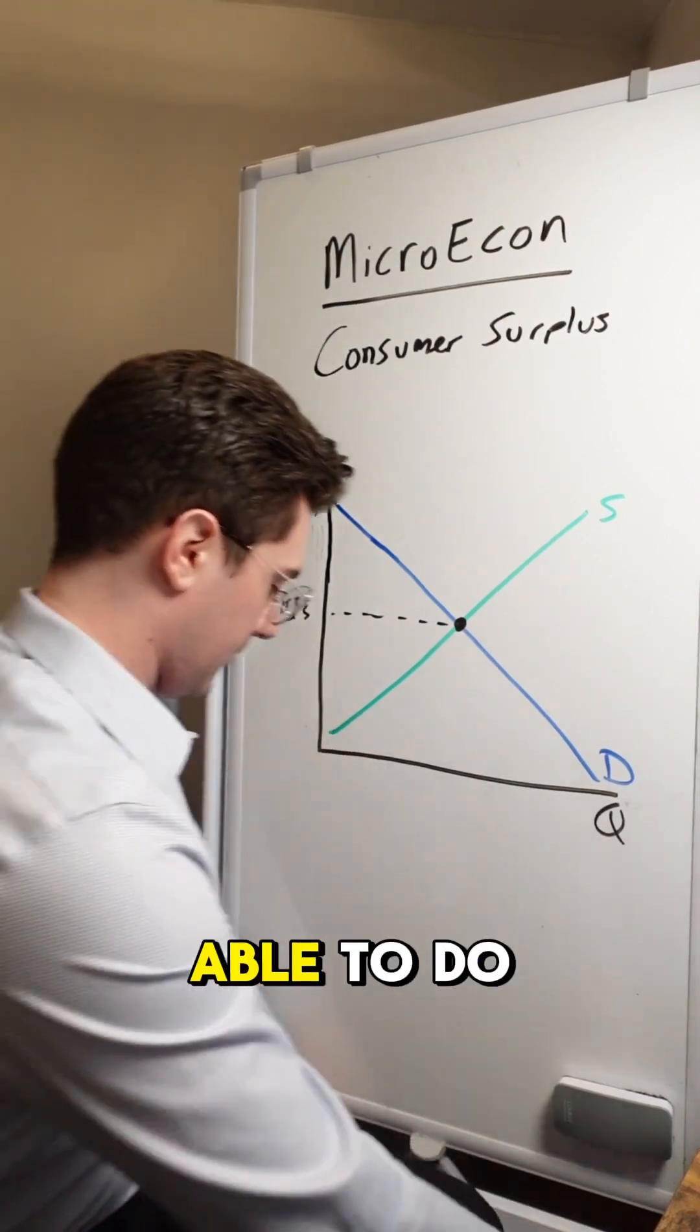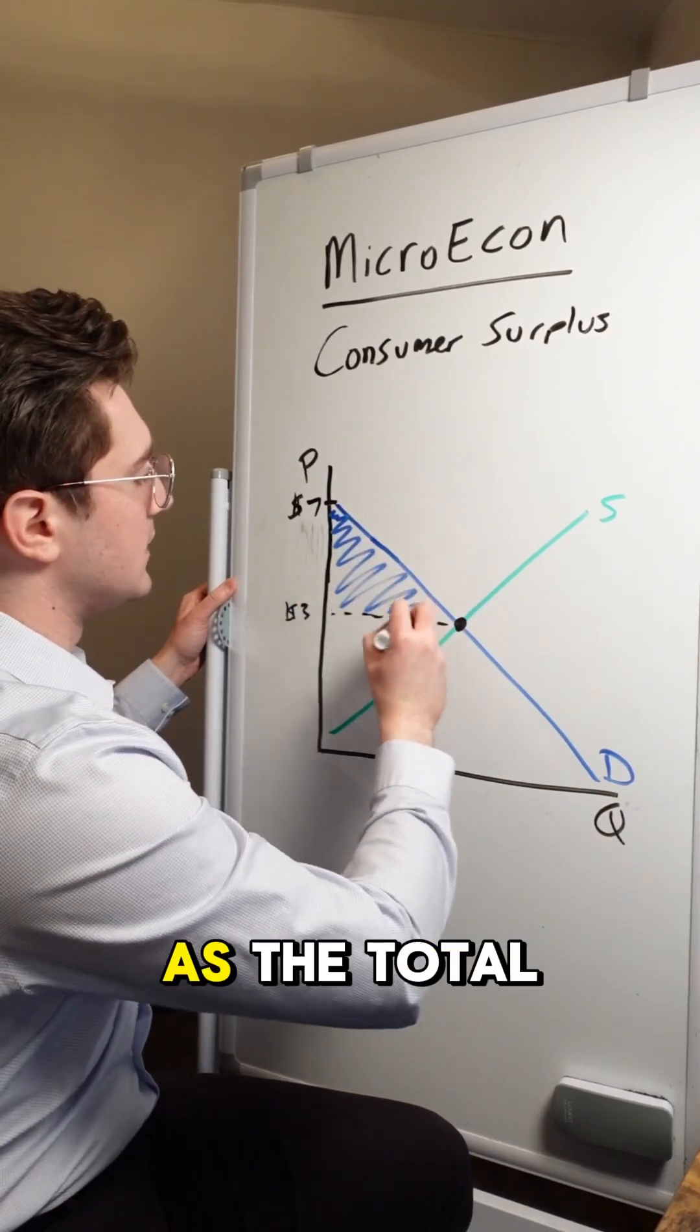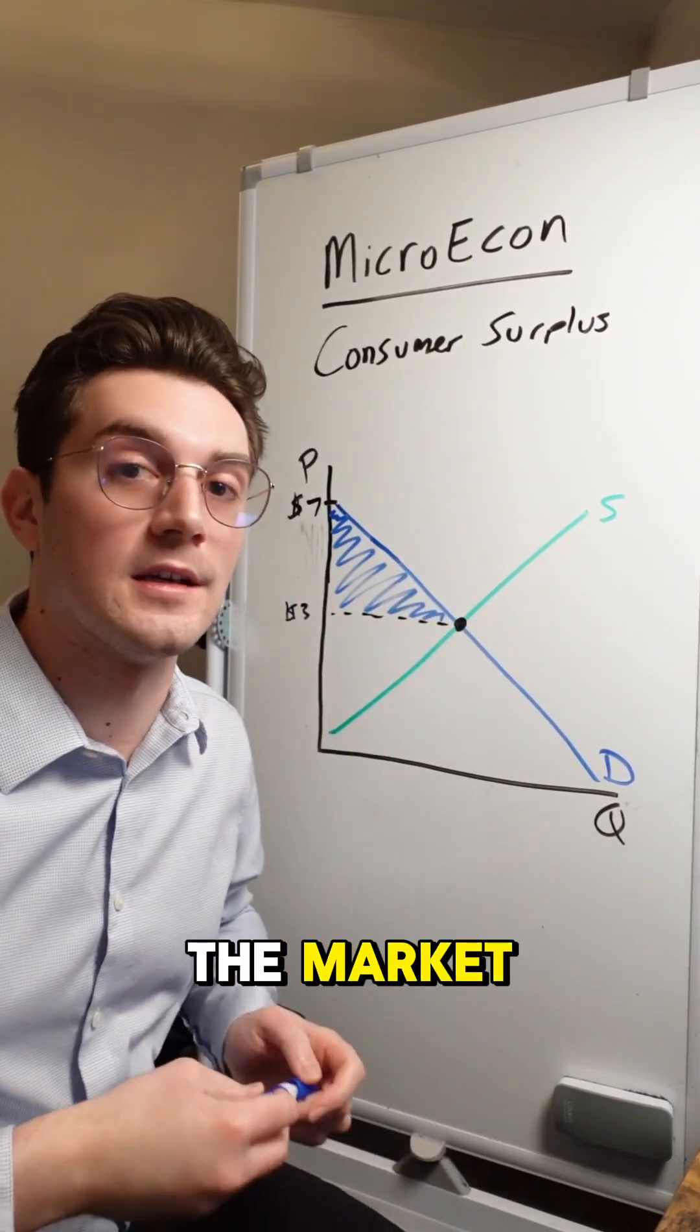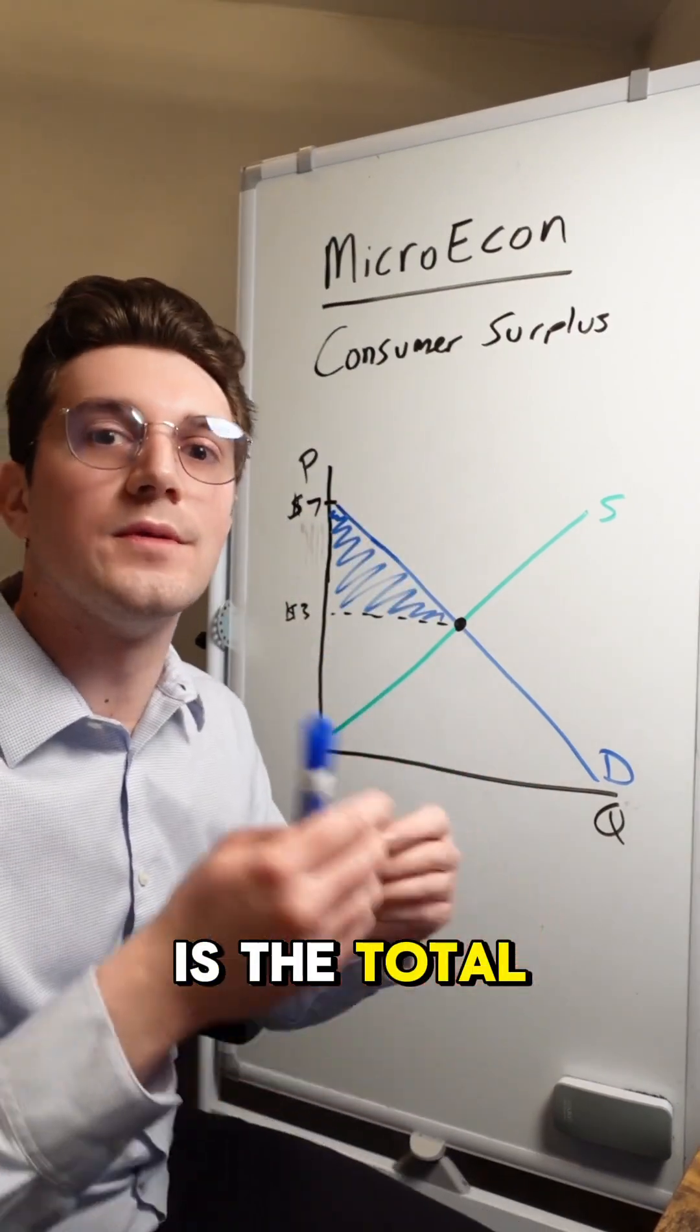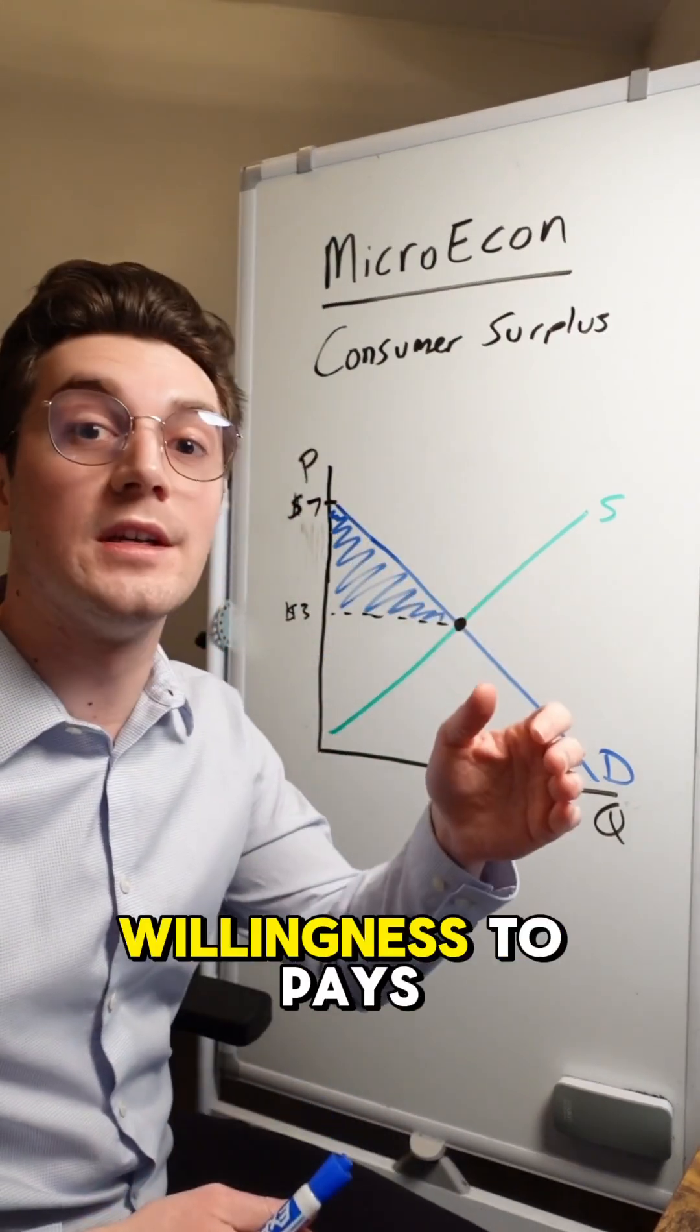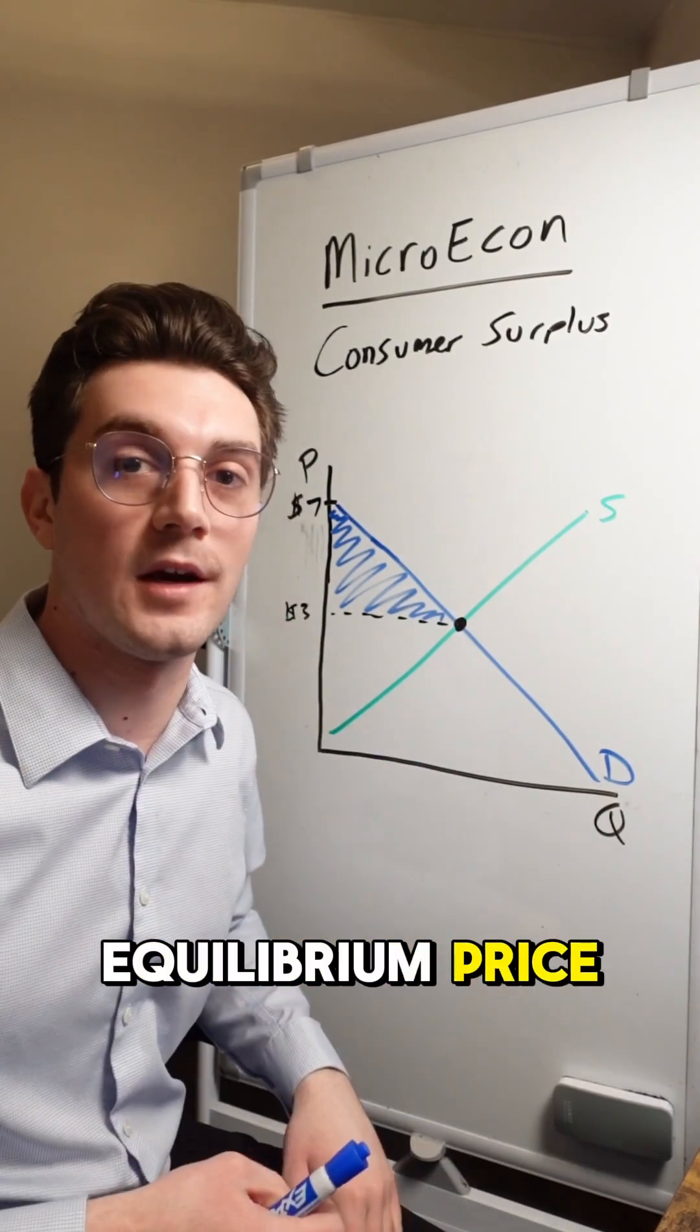So with that considered, what we're able to do right here is visualize this triangle right here as the total consumer surplus in the market. This represents all consumers who are buying pizza, and the area is the total difference between all of their willingness to pays and the price that they're actually paying is $3 of equilibrium price.